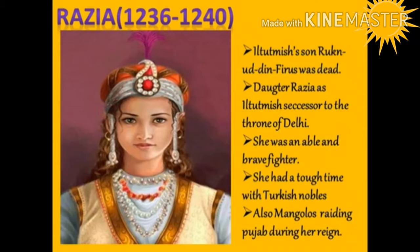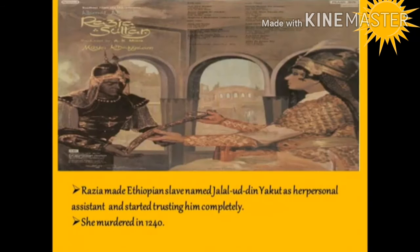Razia, the daughter of Iltutmish, was an able and brave ruler, but she had a tough time with Turkish nobles as she favoured non-Turkish nobles. She also faced the threat of Mongol raids on Punjab during her reign. Razia made an Ethiopian slave named Jalaluddin Yaqut her personal attendant, which led to a revolt of Turkish nobles who conspired against her and had her murdered in 1240.